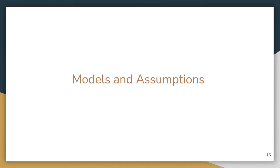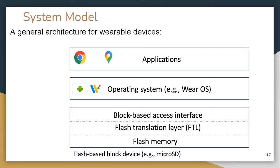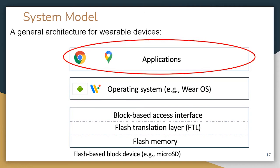This is our system model for a wearable device. The architecture is divided into three parts: the application layer (where apps like Google Chrome or Google Maps are deployed), the operating system layer (where Android or Wear OS reside), and flash storage. Wearable devices use flash memory as external storage, managed by a block-based access interface and a flash translation layer. Our design is built in the application layer since it is easy to deploy.